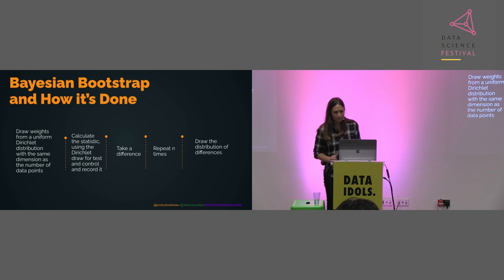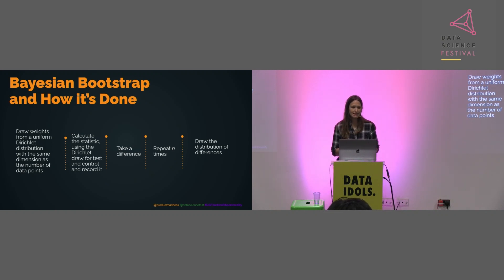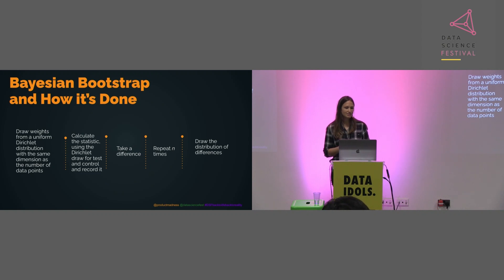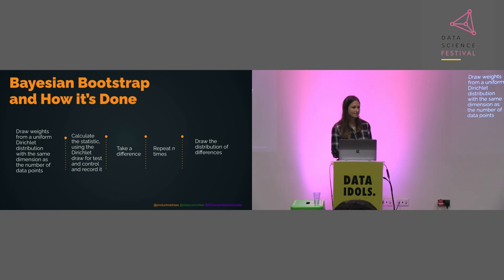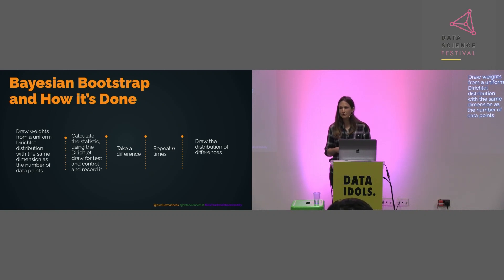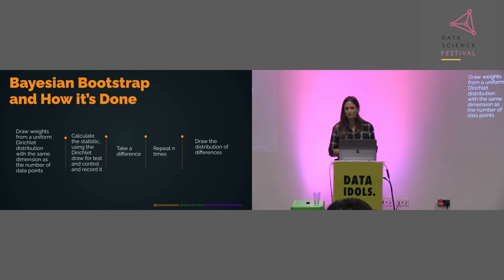Within Product Madness we use Bayesian Bootstrap. The way it works: we draw weights from a uniform Dirichlet distribution with the same dimension as the number of data points. We then calculate the statistic using this draw for the test and control, record it, take the difference, repeat 10,000 times, and draw the distribution of the differences.